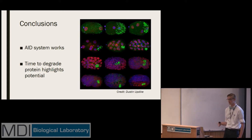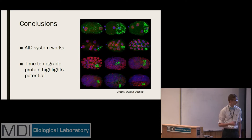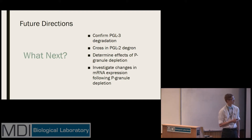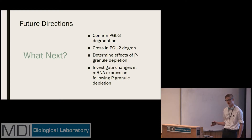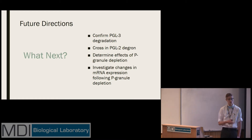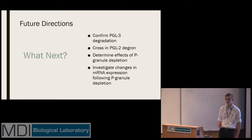Additionally, we want to better understand germline pluripotency — the ability of germ cells to keep dividing and dividing to give rise to the next generation for thousands of years. Moving forward, we need to confirm that PGL3 is being degraded, as I showed the image where PGL1 is degraded. We also want to cross in the PGL2 dead germline to see if there's any difference when targeting the entire family of PGL proteins. We want to determine the effects of P granule depletion long term — the end goal of this project — and use techniques such as RNA-Seq to sequence transcripts that change and determine what genes are turned on or off after P granules are gone.